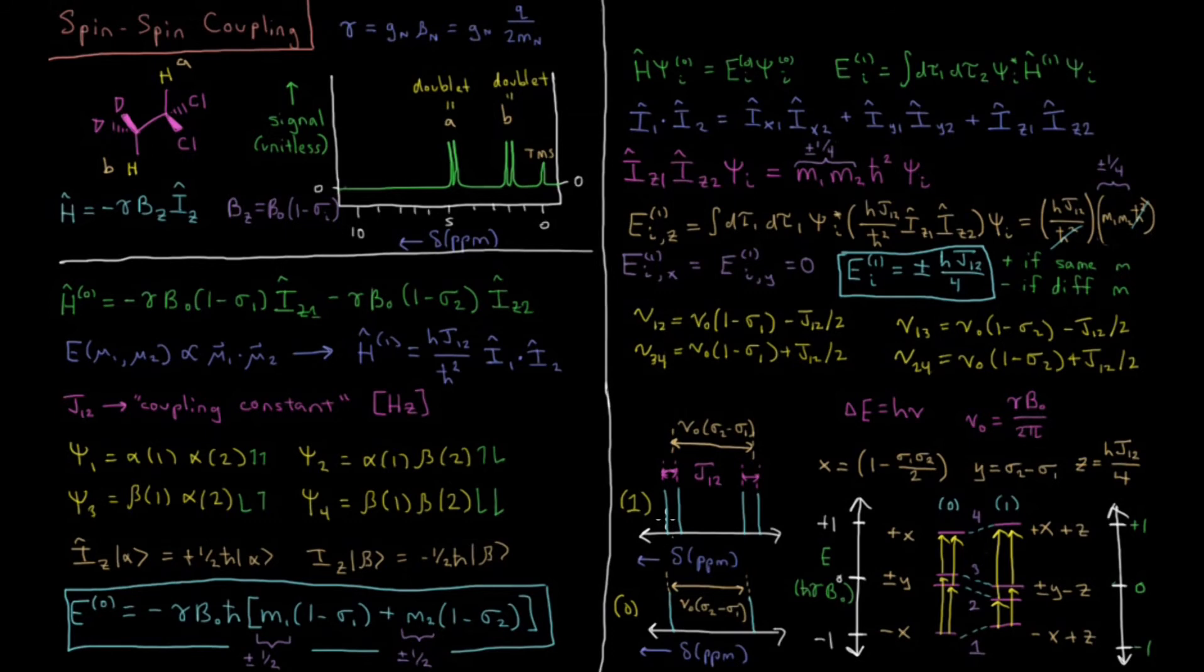So this is why we defined our coupling constant in this way. It's because it changes the peaks to be shifted by plus or minus j12 over 2. And the distance between the two peaks which have been split is now j12. So the distance between the center of these peaks here is our nu 0 sigma 1 minus sigma 2. It's the frequency, it's the default frequency, so the frequency at which TMS absorbs, times the difference in the shielding constants between these two nuclei. And then those peaks, the center of them stays the same, and they split out in either direction, and they move plus or minus j12 over 2. And the separation between them is each j12.